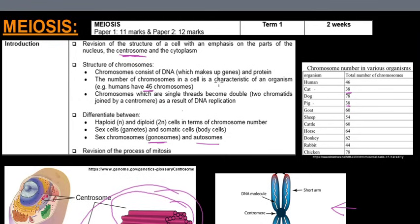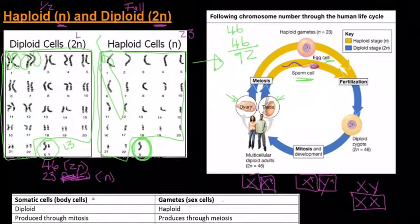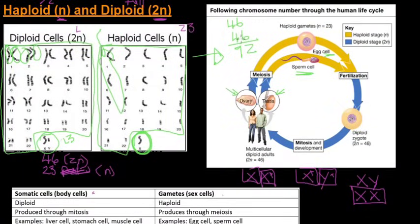If this egg cell has 46 chromosomes and this sperm cell has 46 chromosomes, guess what's going to happen if they join? There's going to be 92 chromosomes, which if you remember from earlier, the number of chromosomes in a cell is a characteristic of an organism. Humans have 46, so if we put 46 and 46 together there's going to be 92, which is not going to be characteristic of the human.